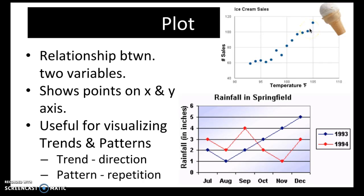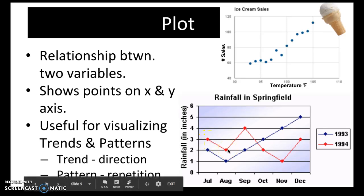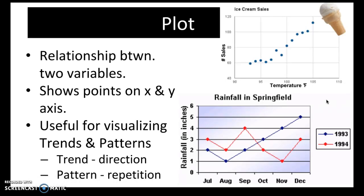Pattern is a repetition or something that you notice that repeats. For example, in the rainfall in Springfield plot shown here, the red line depicts rainfall in 1994 and the blue in 1993. We notice that in both plots, the rainfall decreases from July to August. If we had data for several more years, that would become a pattern because it repeats.